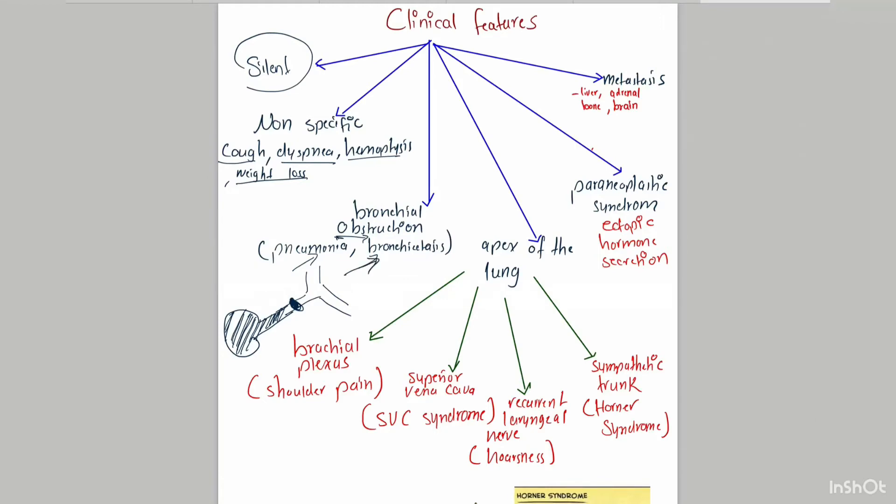Other groups of signs and symptoms depend on the location of the lesion. For example, if the lesion is located in the apex of the lung, which is called Pancoast tumor, this lesion in the apex will cause compression on the brachial plexus and present as shoulder pain and hand weakness.